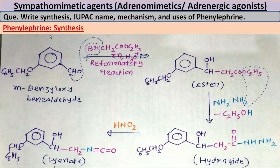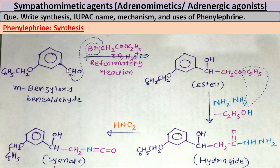First we will discuss synthesis of phenylephrine. The starting material for the synthesis of phenylephrine is meta-benzyloxybenzaldehyde. This is the aldehyde group present on benzene. The benzyl portion is attached via oxygen, so an ether bridge is there. This benzyloxy is present on the meta position of the aldehyde group, so it is known as meta-benzyloxybenzaldehyde.